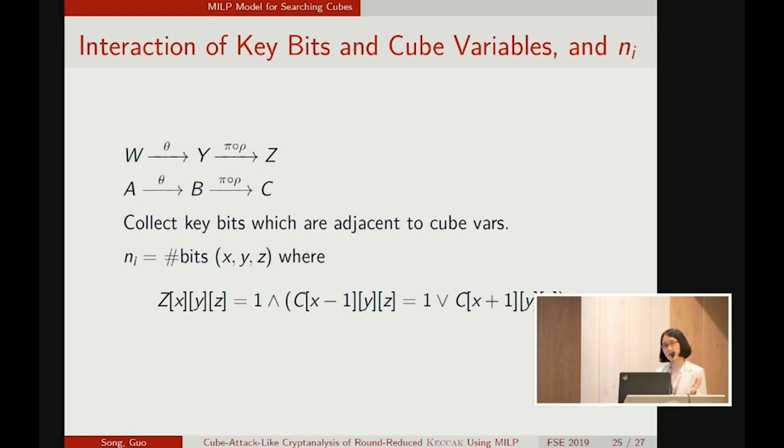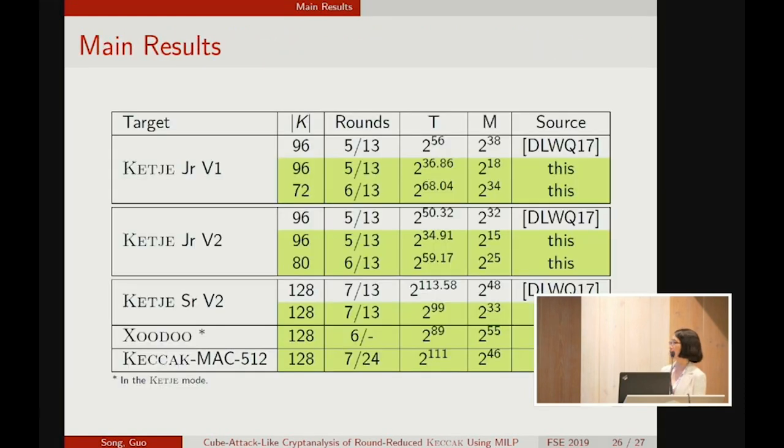So the model is done. We apply it to three KECCAK-based constructions. For KEYAK junior version one and version two, we improved the previous attacks. Something interesting is that if the key size is reduced, one more round can be attacked for these two versions. And for the version senior v2, we also improved the attacks.